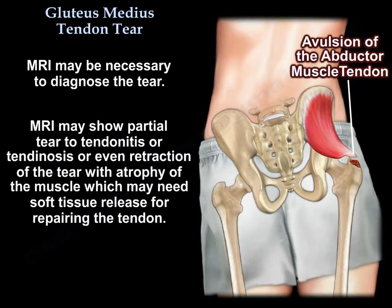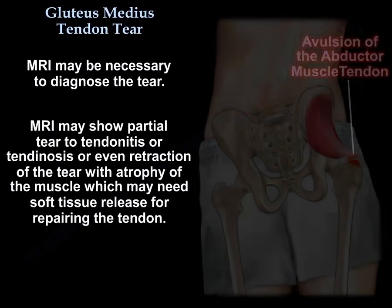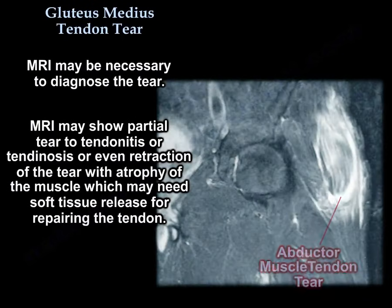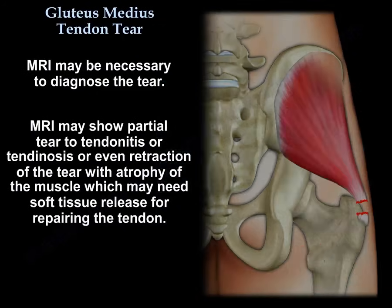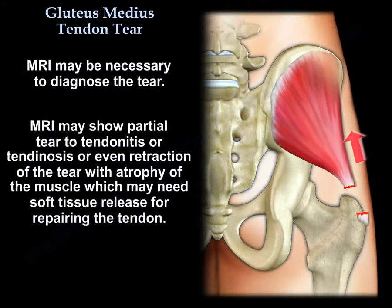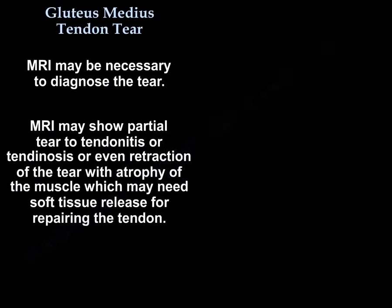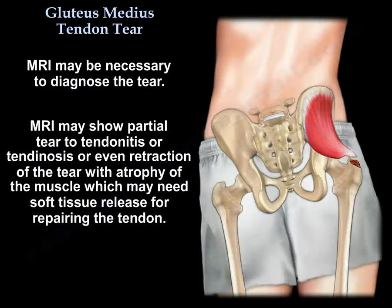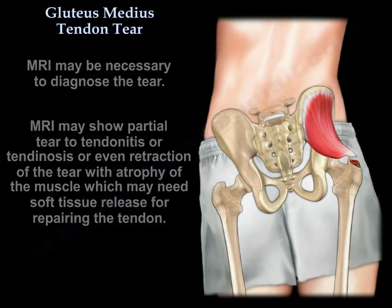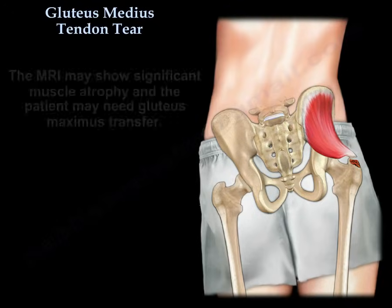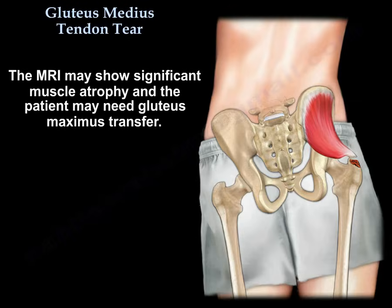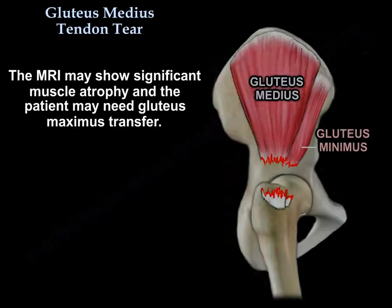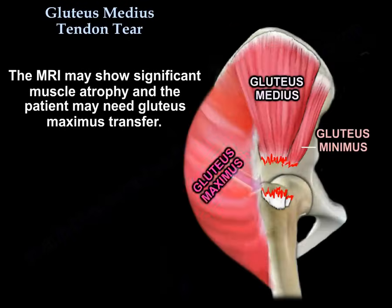MRI may be necessary to diagnose the tear. It may show a partial tear due to tendinitis or tendinosis, or even retraction of the tear with atrophy of the muscle, which may need soft tissue release for repairing the tendon. MRI may also show significant muscle atrophy, indicating the patient may need gluteus maximus transfer.